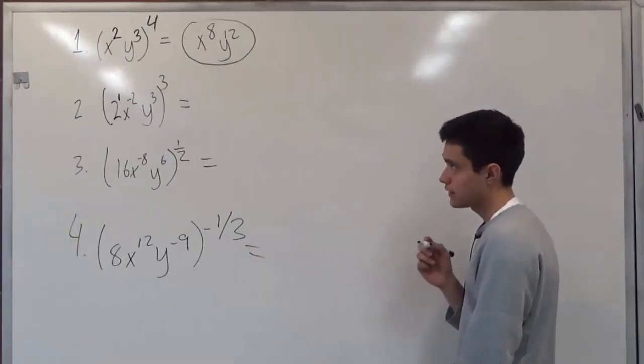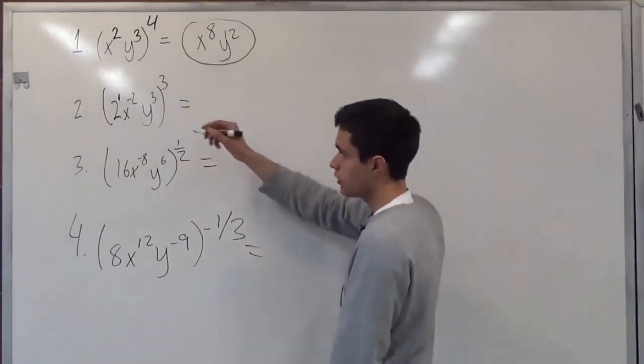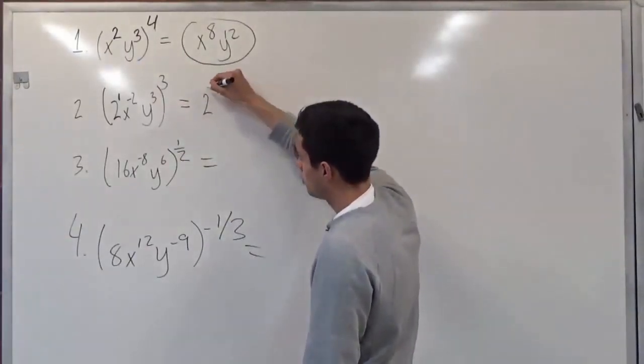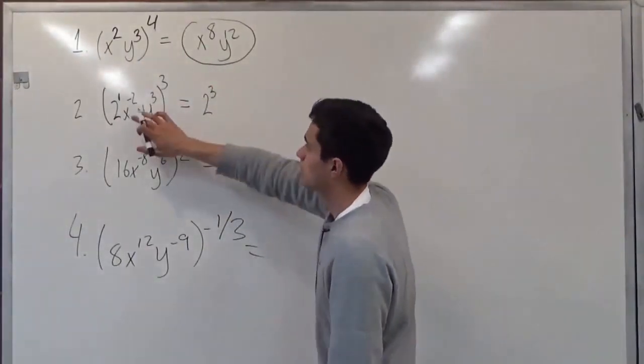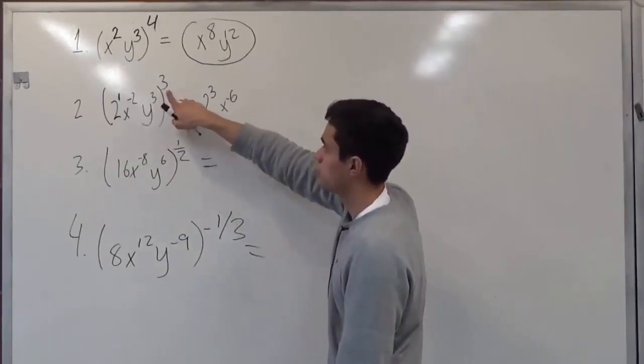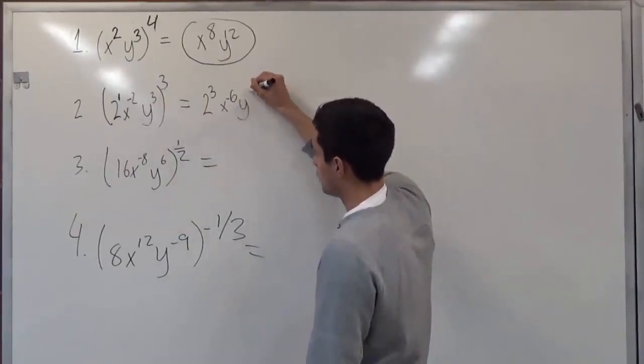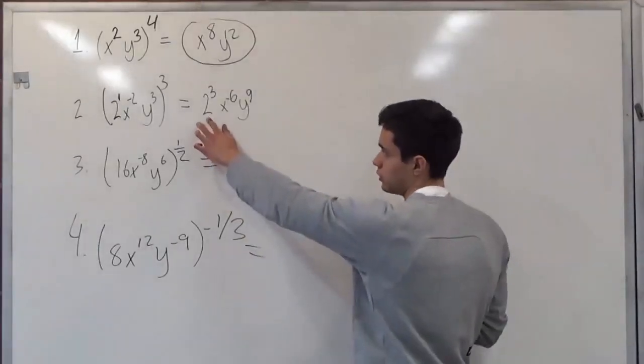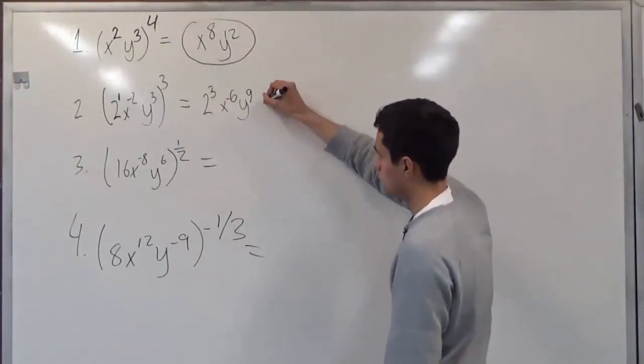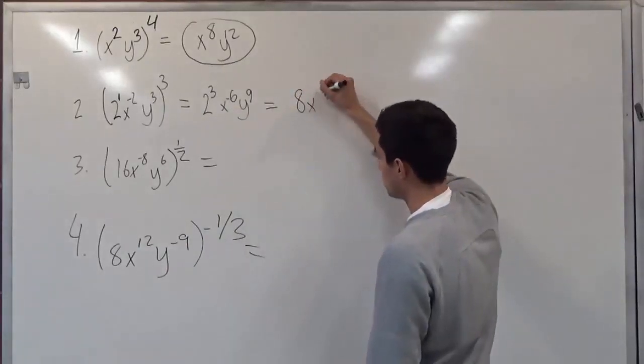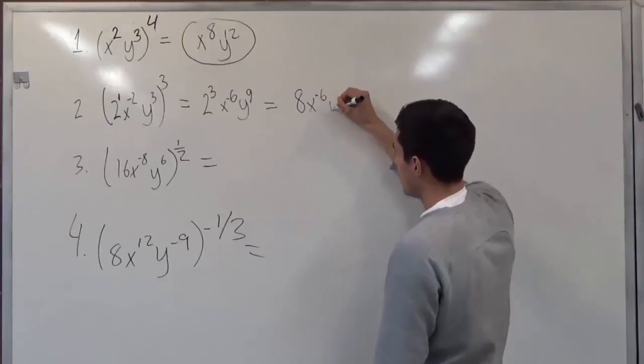So since it has a base power of 1, you're basically just saying, with our initial rule, 2 to the third times negative 2 times 3, which is x negative 6, 3 times 3, which is y to the ninth. So we know that 2 to the third power will give us 8, x to the negative 6, and y to the ninth.